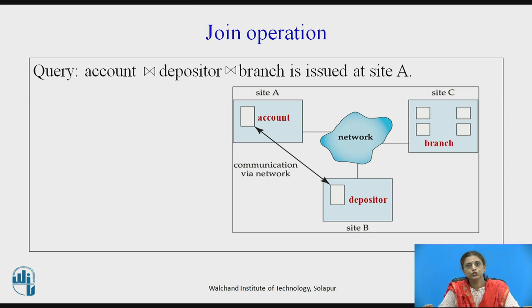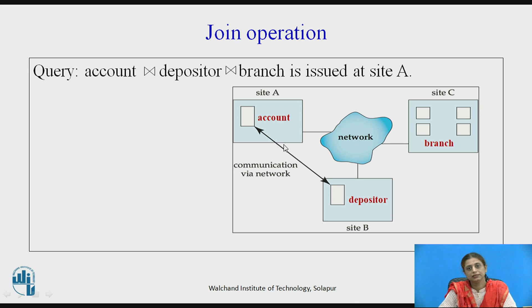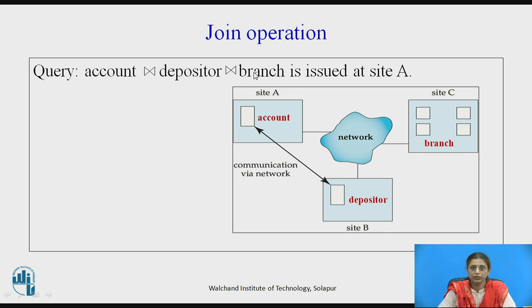Before moving to semi-join, let us understand how the join operation is performed in distributed databases, especially when the relations are at different sites. We have three sites A, B, and C. The three relations are: account at site A, depositor at site B, and branch at site C. The query account join depositor join branch is issued at site A.